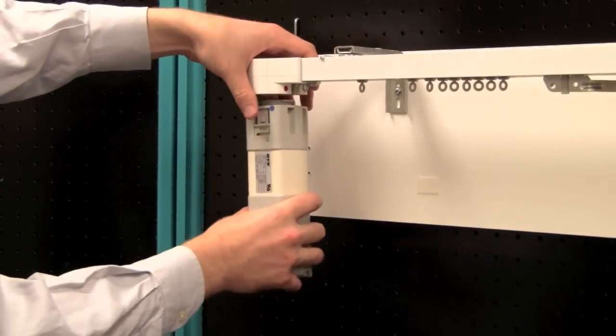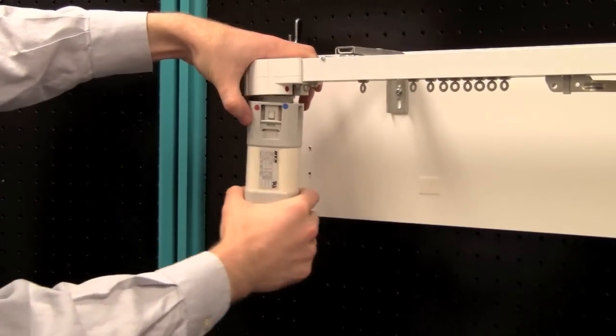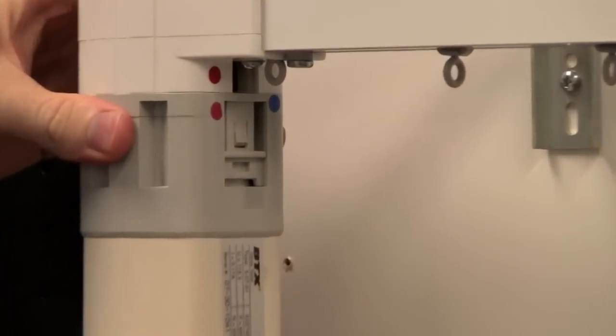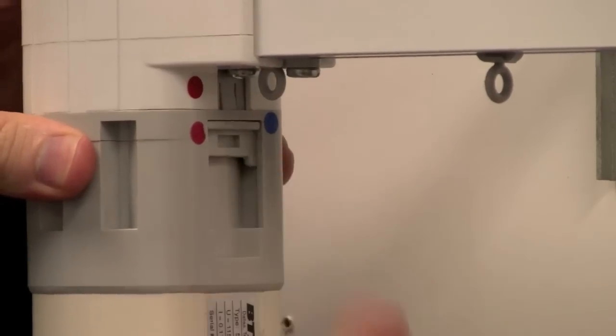To reattach the motor, we will insert the motor drive shaft into the drive gear with the motor sitting at a quarter turn in the same manner that we removed it. Now we slide the bayonet clip in place to lock the motor.